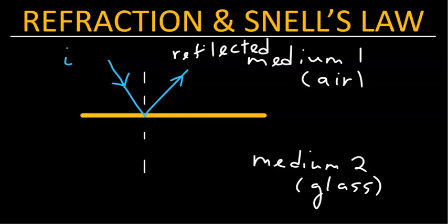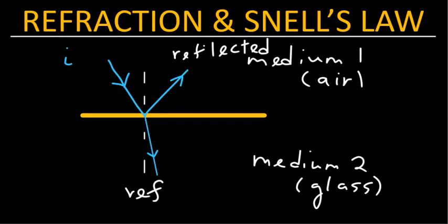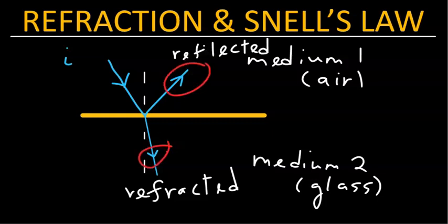The other beam would penetrate into the second medium like that, and the second beam is called the refracted beam. So this is the reflection process, and this is the refraction process.